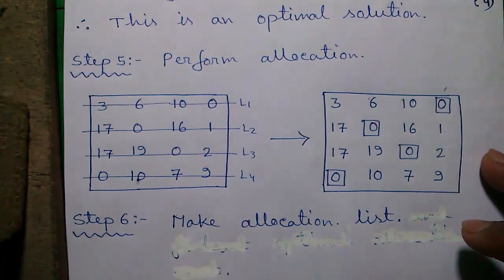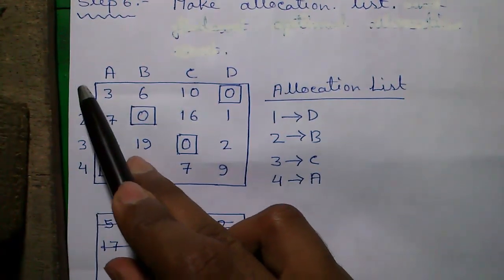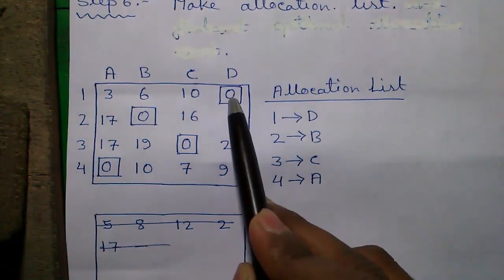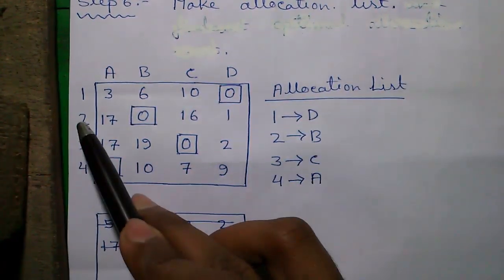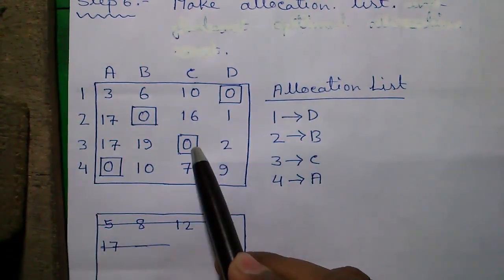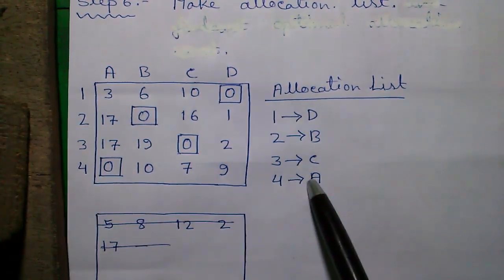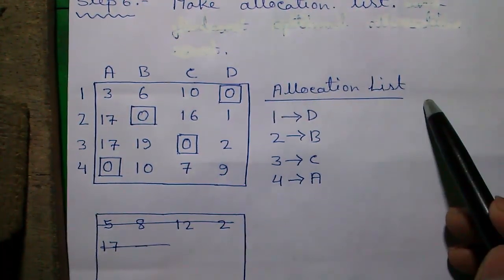Next we will find out the allocation list. So allocation list is given by machine 1 is assigned to person D, that is 1D. Machine 2 is assigned to person B, 2B. Machine 3 is assigned to person C, so 3C. And machine 4 is assigned to person A, so 4A. So this is the allocation list.